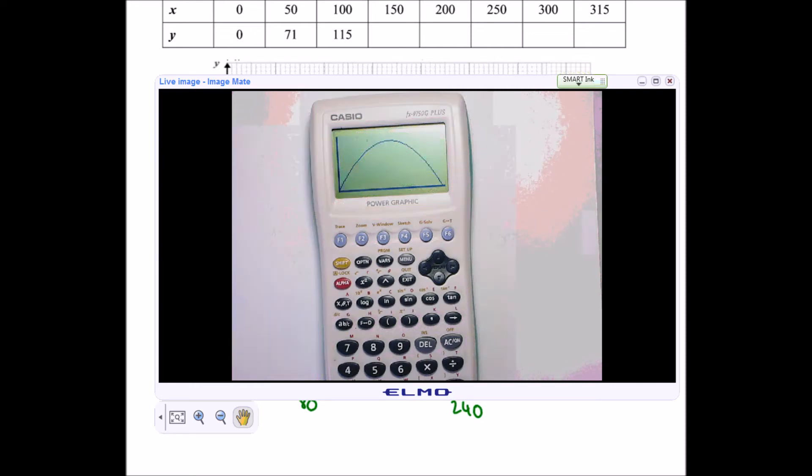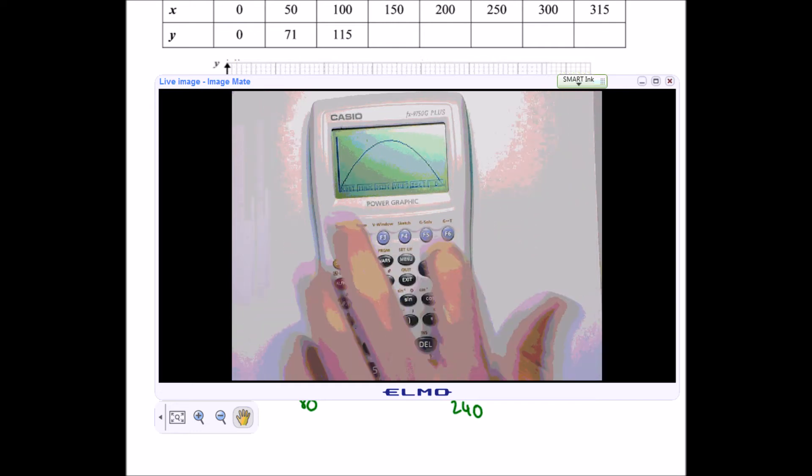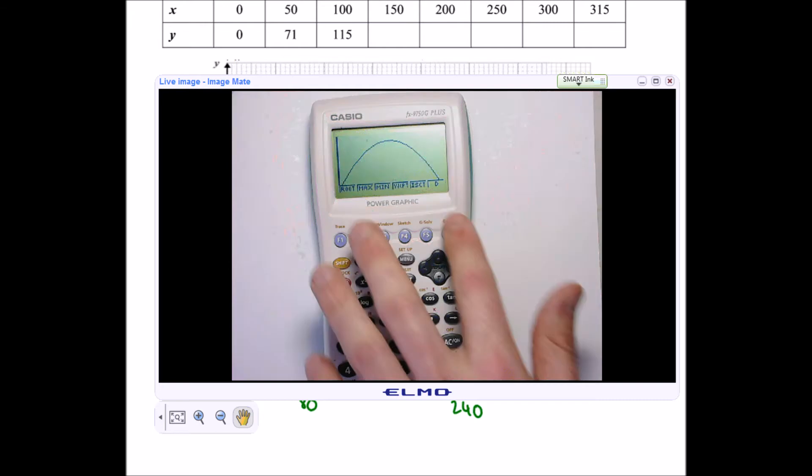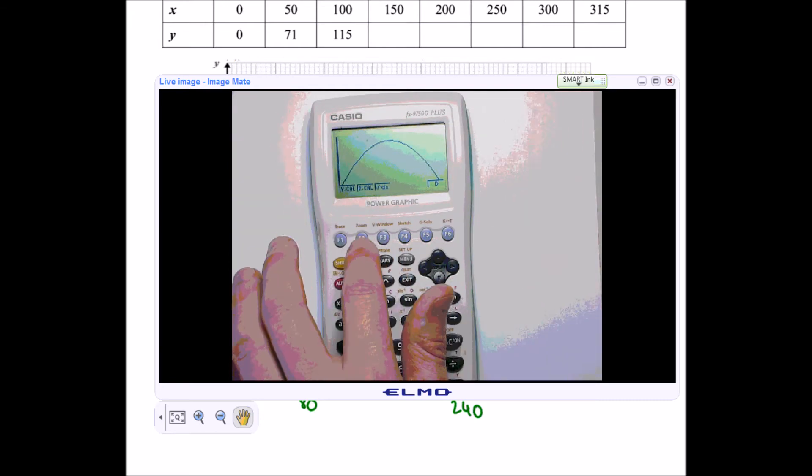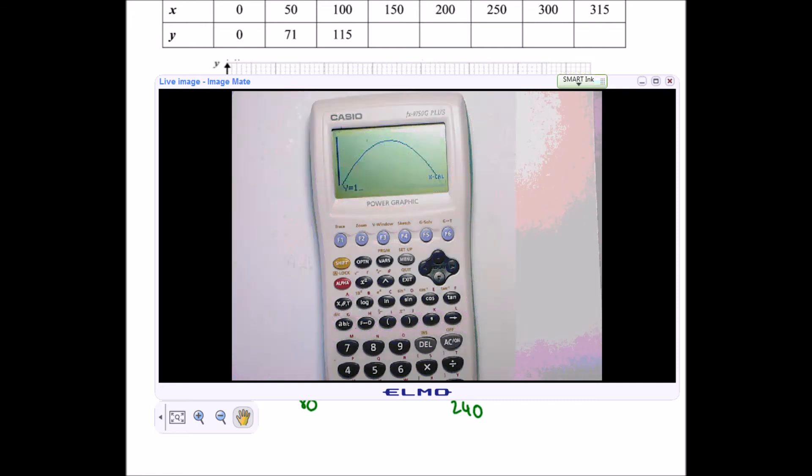And now what I want to do is I want to calculate an x value. So I'm going to go to g solve to graphically solve this, press across, and I'm going to calculate an x value. So I'm going to do x calc, when y is 100, what's my x value. And you'll be able to see there's a little square which runs along your calculator. And it will stop when it gets to the right value. We get 79.04. And if I press on again, again it's got to think a little bit. And you can see, again, the arrow's running along the screen, and it's going to stop at 100. And that's 235.35.